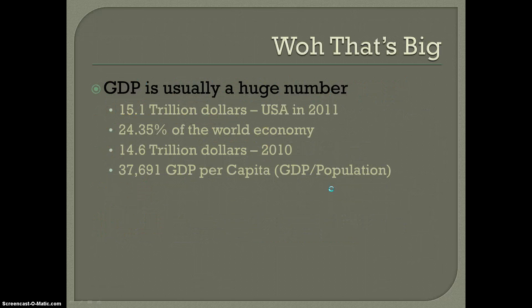GDP is usually a huge number. Try to sit here and count to a trillion — I'll see you when you're about 72. 15.1 trillion dollars was the US GDP in 2011. That was 24.35% — basically almost a quarter of the world's economy was in the United States.